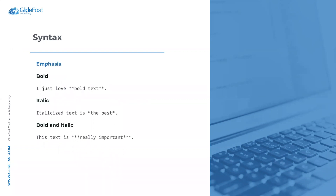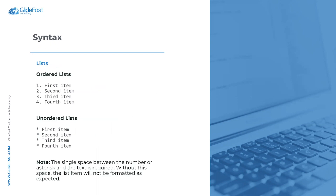For emphasis: to bold text inline, put two asterisks on either side. Italic is even easier — one asterisk on either side. For bold and italic combined, use three asterisks on either side. It's very simple, and you can easily find and replace a specific word throughout your document and wrap it with two asterisks to bold every instance at once.